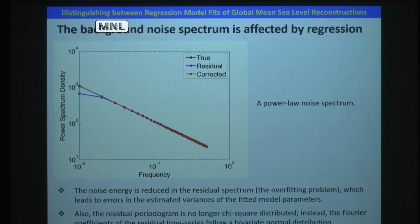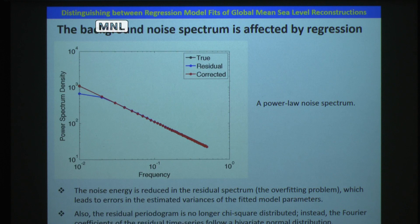Background noise is often derived from regression model residuals and is characterized by a spectrum. This figure shows an example of a power-law noise spectrum, which is a straight line in log-log space. When we apply the regression model, the noise energy is reduced, as shown by the blue line, which is referred to as an overfitting problem.